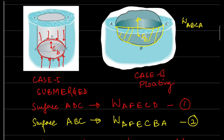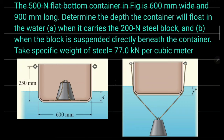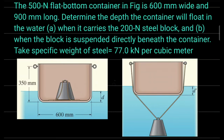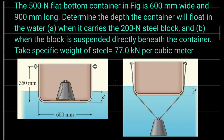I hope this illustration helps you understand the buoyancy principle. Now let's take a numerical example. In this problem, a 500-newton flat-bottom container, which is 600 mm wide and 900 mm long, is given. We need to determine the depth at which the container will float in water.